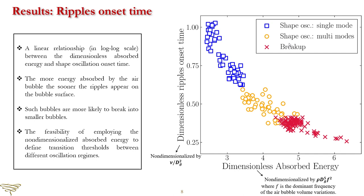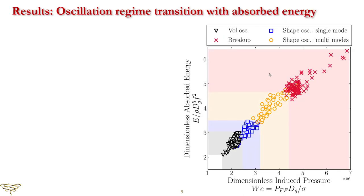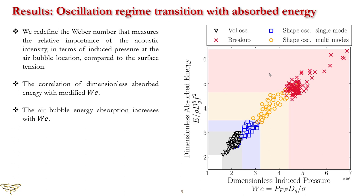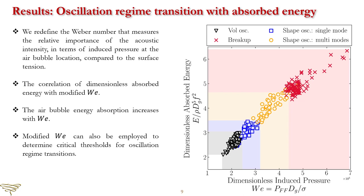In addition, such bubbles are more likely to break into tiny bubbles. It also indicates the feasibility of employing the non-dimensionalized absorbed energy to define transition thresholds between different oscillation regimes. The two plots imply that local acoustic intensity and air bubble size are determinant factors in the energy absorption of air bubbles. Hence, to measure the ability of air bubbles with different sizes for energy absorption, we define a Weber number based on the acoustic intensity in terms of the induced pressure at the air bubble location. This plot illustrates the correlation of dimensionless absorbed energy with Weber number, indicating increasing energy absorption with Weber number. Most importantly, the modified Weber number can also determine the critical thresholds for oscillation regime transitions.